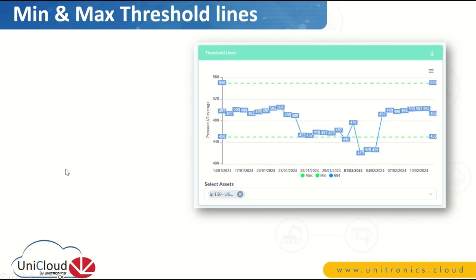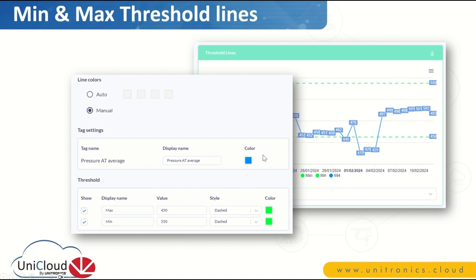With the new version, we are introducing a new type of KPI tool: minimum and maximum threshold lines. You can see an example on screen. These threshold lines are at the widget level — they are not cross-platform, because they are related to a specific parameter, in this case pressure. For a specific system pressure, you can place a minimum and a maximum. You can define the name, the min, the max, the type of line, and the color. You can decide to show both, one, or none of them. It's very straightforward and easy to use. However, it is still at the widget level, not cross-platform, because the min and max are related to a specific pressure parameter.